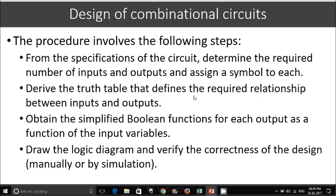First step will be defining the problem statement, from which we are supposed to determine the number of required inputs and also outputs. Once we determine the number of inputs and outputs, we are supposed to assign the symbol to each. For example, if we have 3 inputs and 2 outputs, we can say ABC are the inputs and XY are the outputs. Once we assign the symbol to each of the inputs and outputs, then we are supposed to derive the truth table.